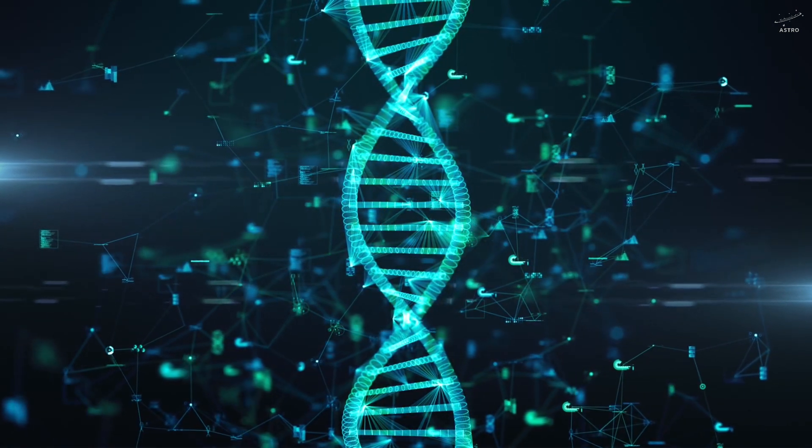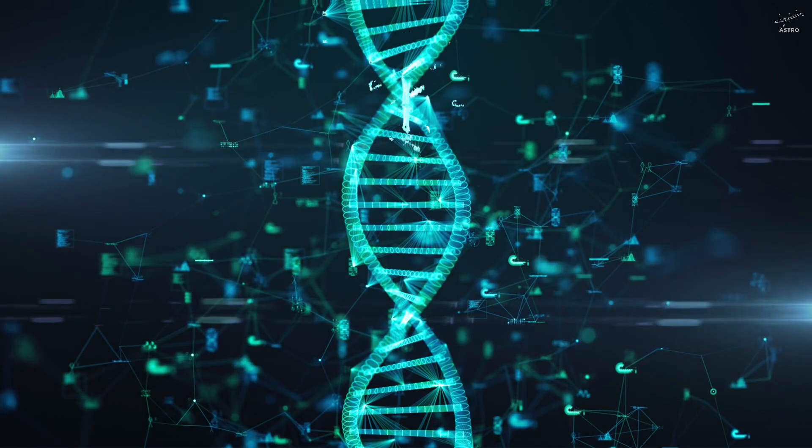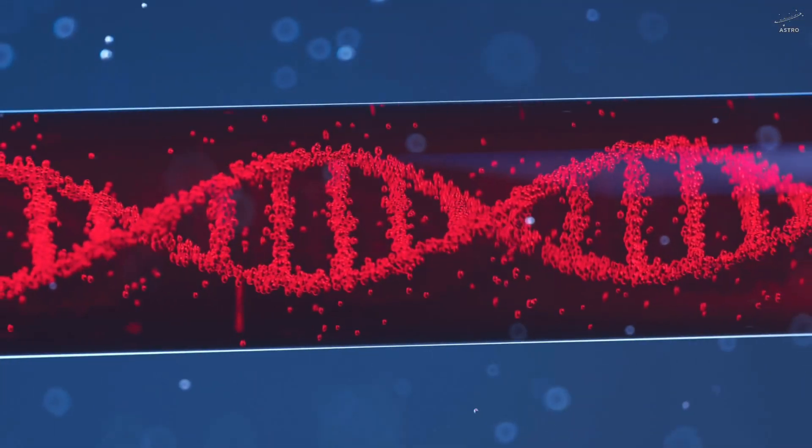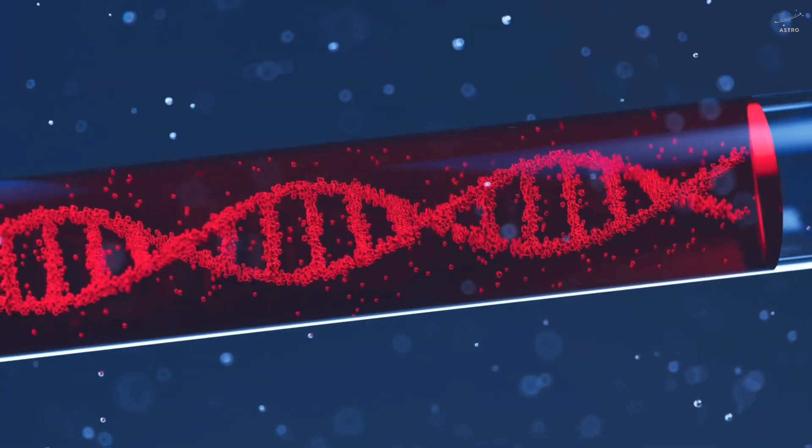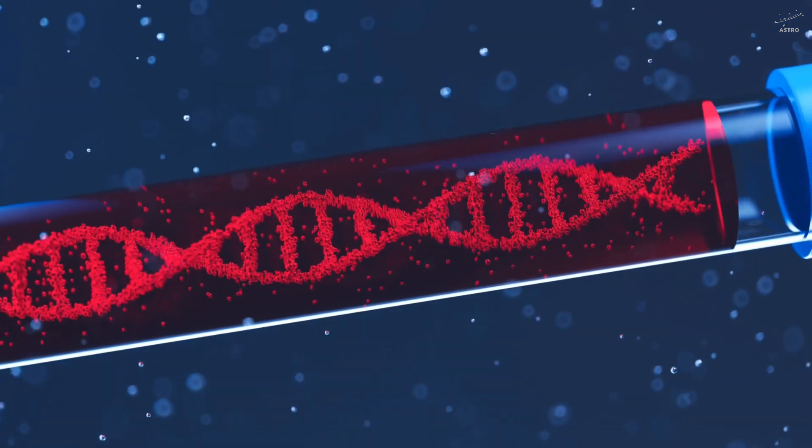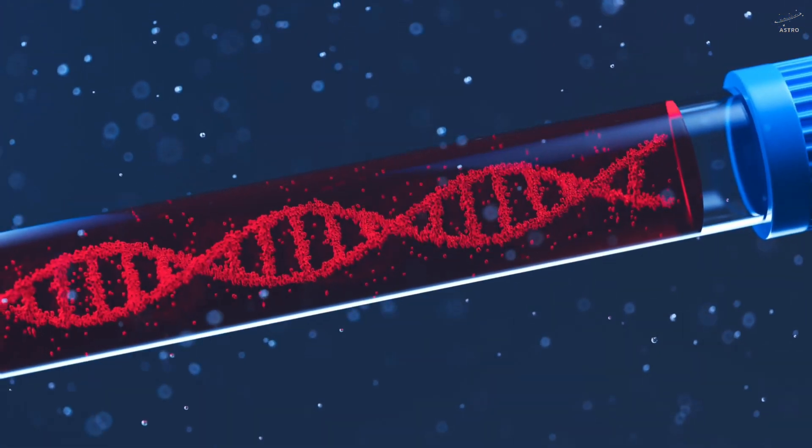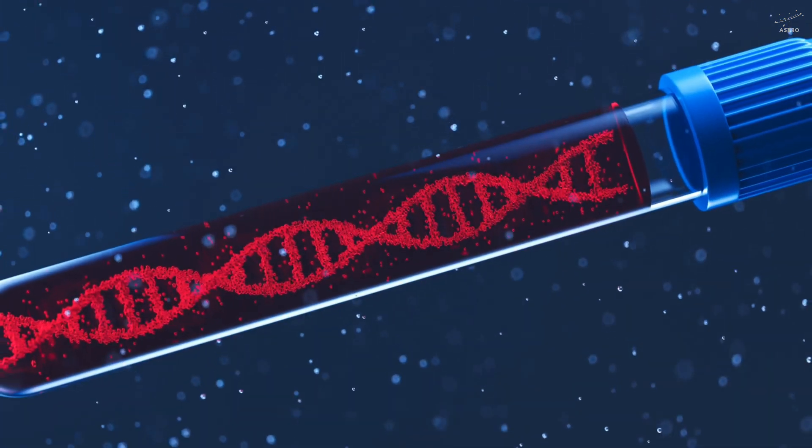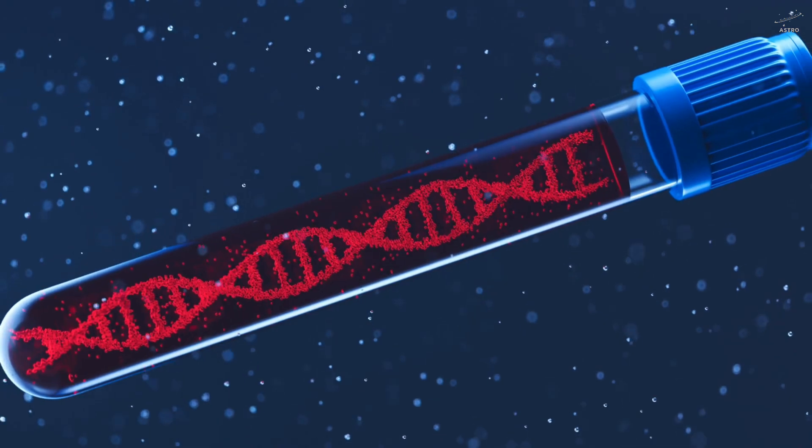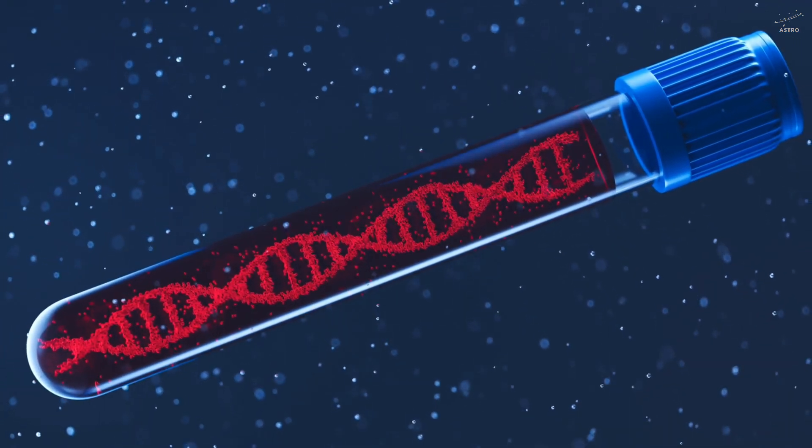But DSUP is only one piece of a much bigger survival system. Tardigrades also make heat shock proteins, tiny molecular bodyguards that protect enzymes, especially when temperatures swing from blazing hot to freezing cold. Think of them as microscopic repair crews, keeping the cell's machinery running, even in chaos.